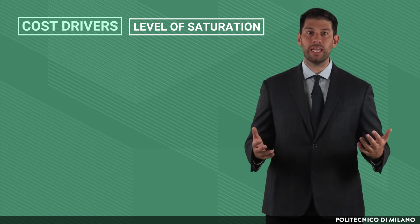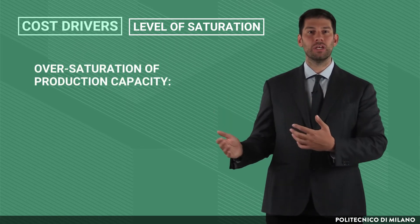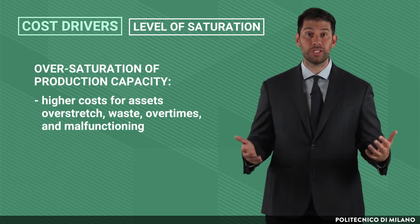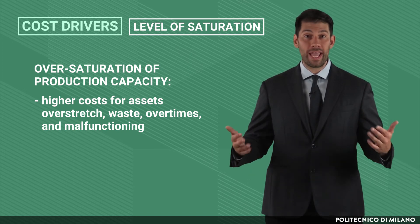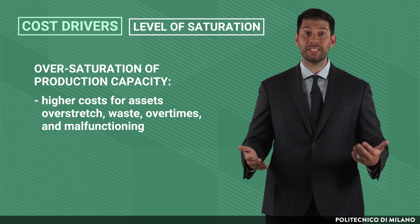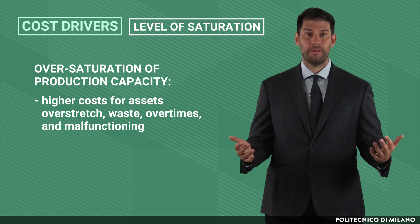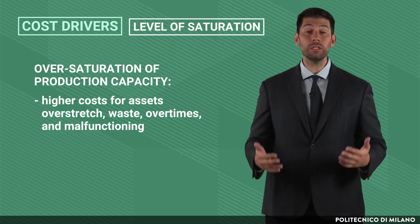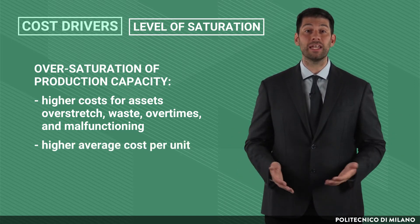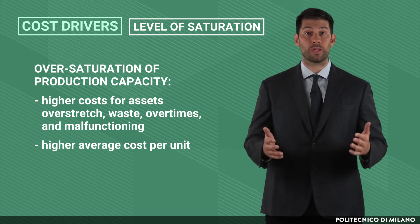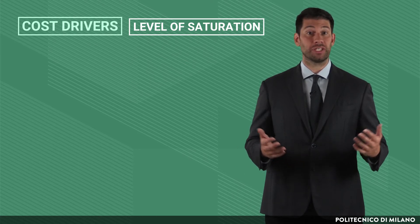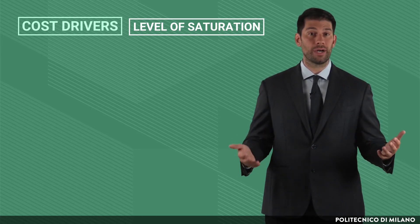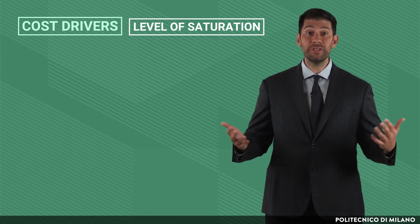Conversely, in over-saturation, we have higher costs due to asset over-stretch, waste, overtimes, and malfunctioning. These additional costs still determine an increase in average cost per unit. So, given that both over- or under-saturation conditions are suboptimal, why do they occur?